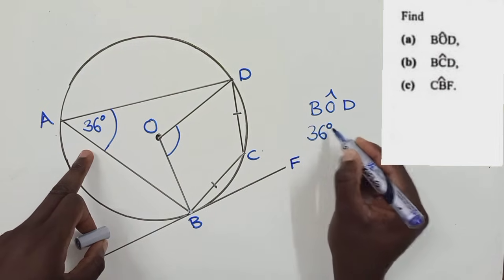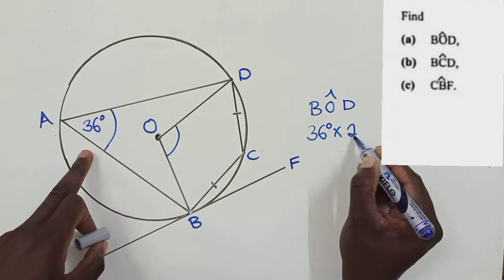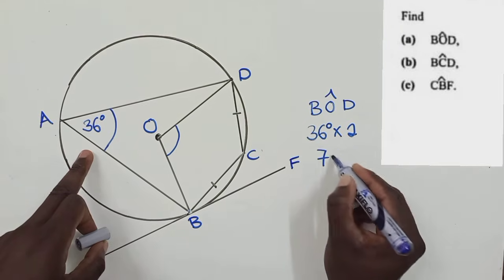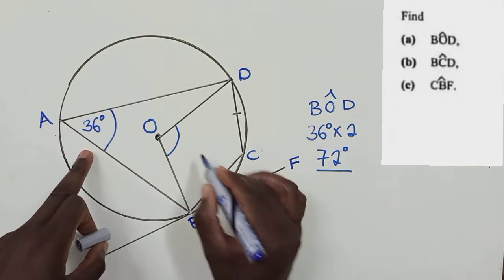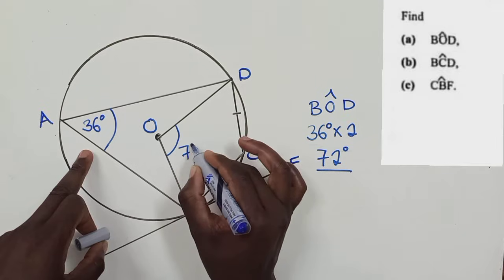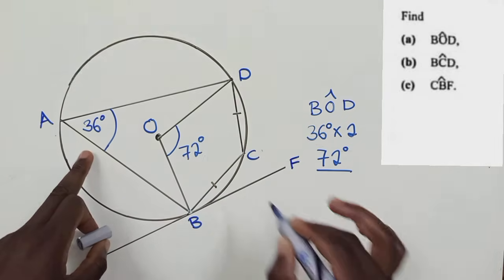So, meaning this angle is twice this angle. We just say 36 degrees times 2, meaning twice, which will give us 72 degrees. So the angle here is 72 degrees.